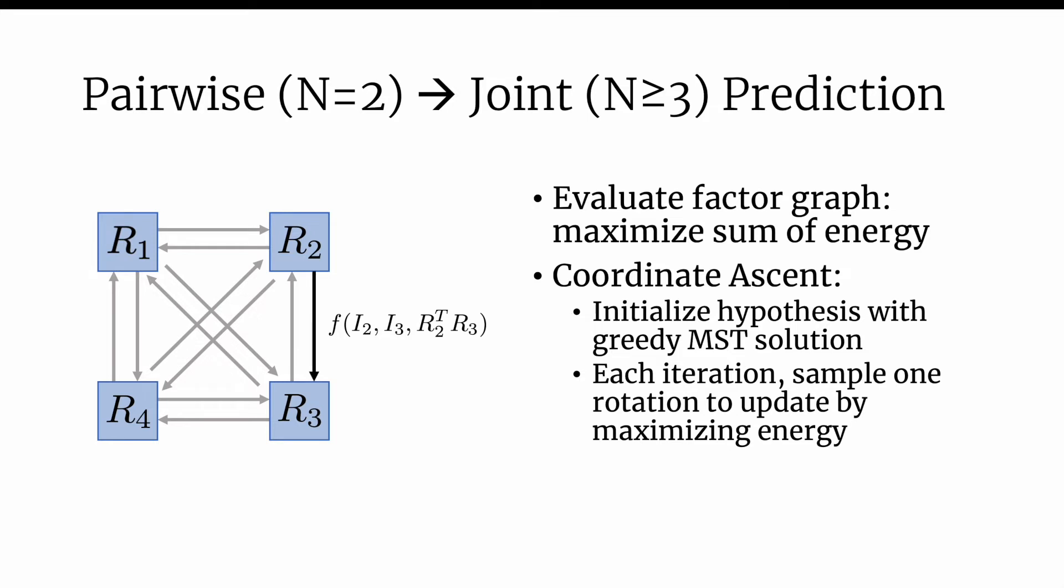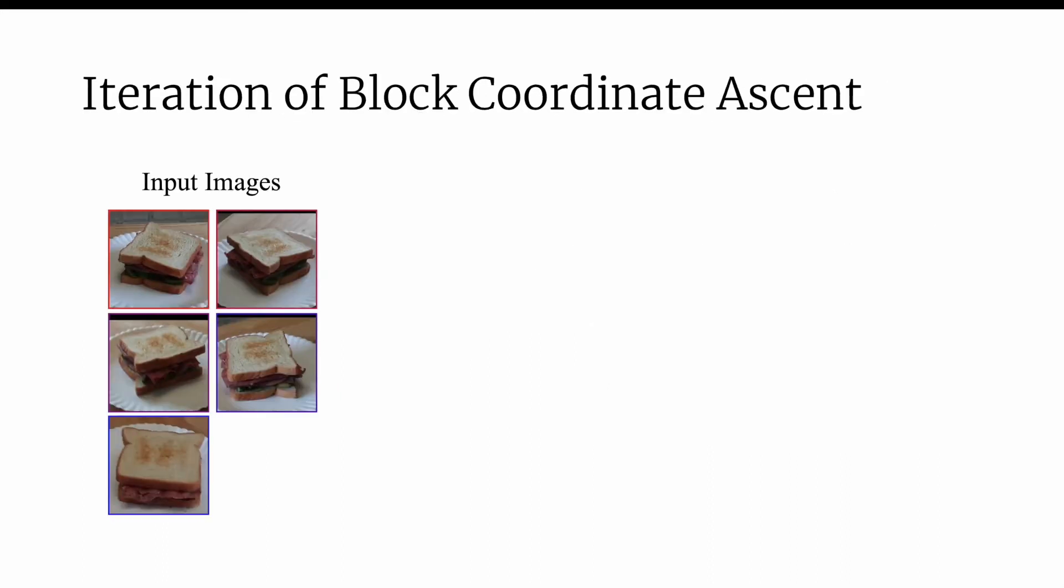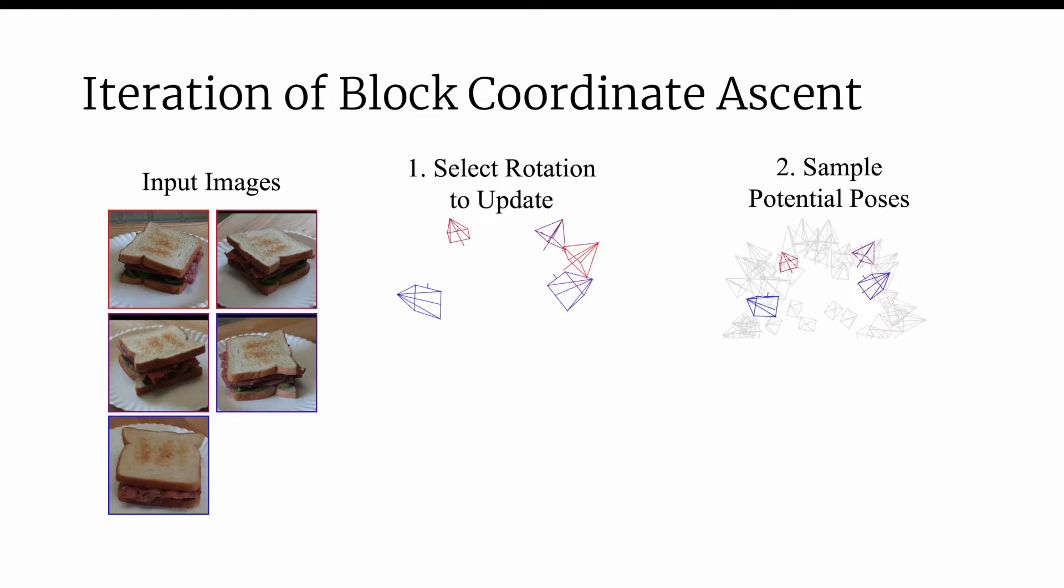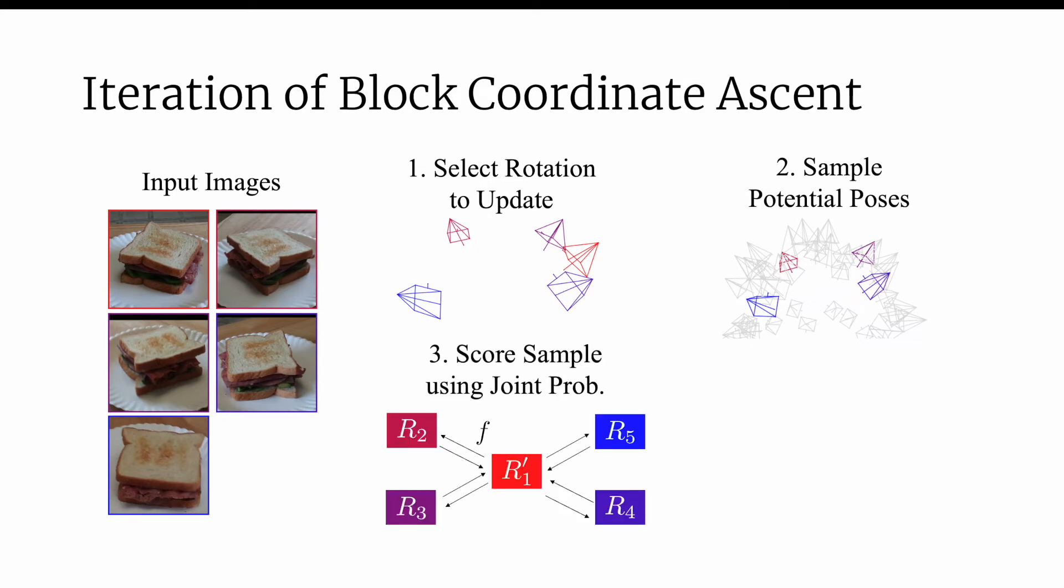At each iteration, we sample one rotation to update by maximizing energy. Here we visualize one iteration of coordinate ascent. Given five images of a sandwich, we start with a set of possible rotations. We select one of the rotations to update, in this case the red one on the right. We randomly sample many possible potential updates. For each potential update, we compute the sum of the energy with each other rotation and select the one that maximizes the energy. We repeat this process until convergence.